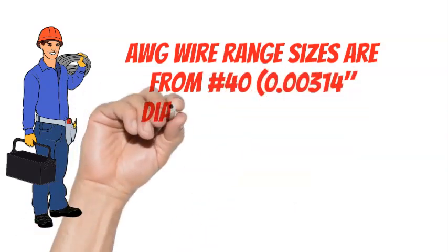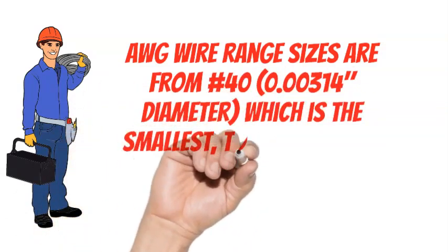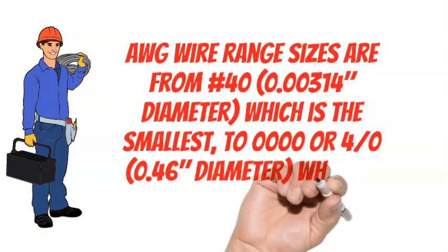AWG wire range sizes are from number 40 which is the smallest, to 0000 or 4-aught which is the largest.